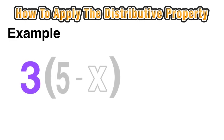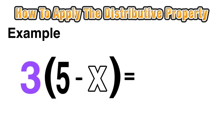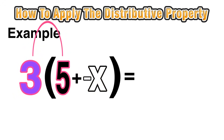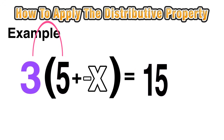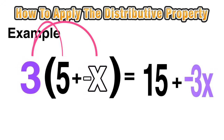Let's look at another example: 3 times the quantity 5 minus x. This one's a little different since it has a minus sign, but we can express 5 minus x as 5 plus negative x. Now we distribute the 3: 3 times 5 is 15. Carrying the plus sign, 3 times negative x equals negative 3x. We can then simplify that plus negative 3x to just minus 3x, giving us 15 minus 3x.